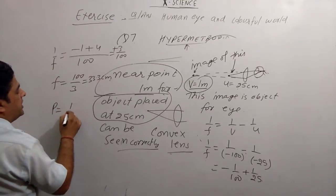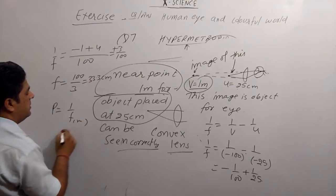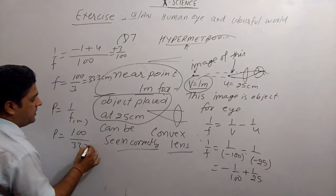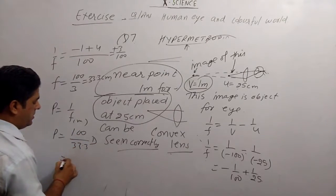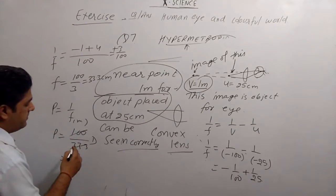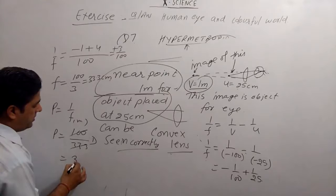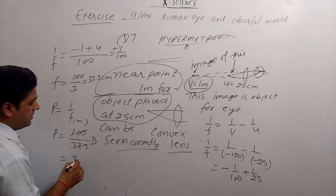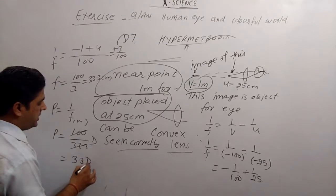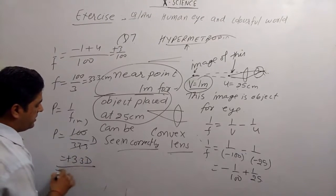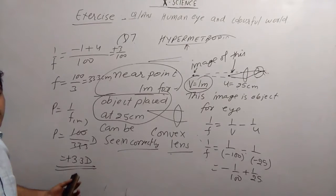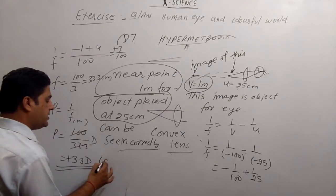This is the power, power is 1 by f in meter, here, again, 100 by 33, 3 D, that is again, what? 3 point 3 D, plus. This is the power of this convex lens.